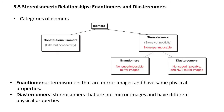Section 5.5 covers stereoisomeric relationships. We're going to look at enantiomers and diastereomers and learn how to draw all the enantiomers and diastereomers for a given compound. The first type of isomer we learned was a constitutional isomer — same molecular formula, different connectivity. Stereoisomers have the same connectivity and molecular formula but a different spatial arrangement of atoms in space. There are two types of stereoisomers: enantiomers and diastereomers.